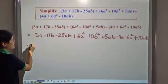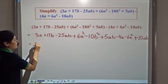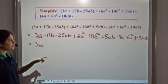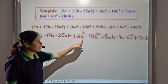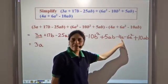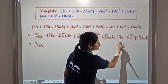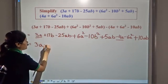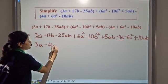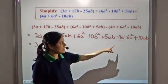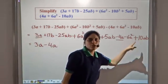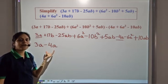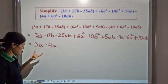Now we look for all the like terms. We have 3a here, and we also have minus 4a. These two are like terms containing only the variable a.